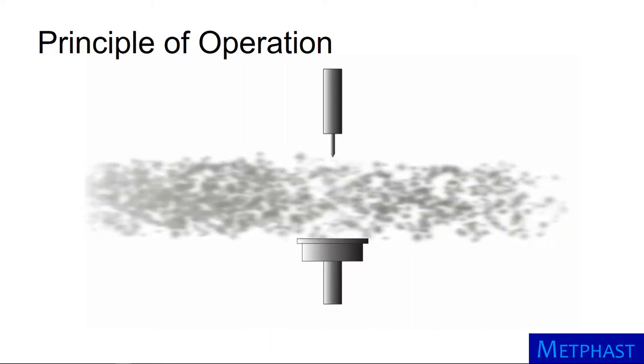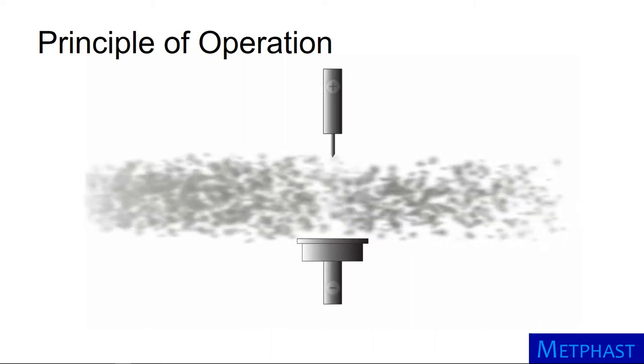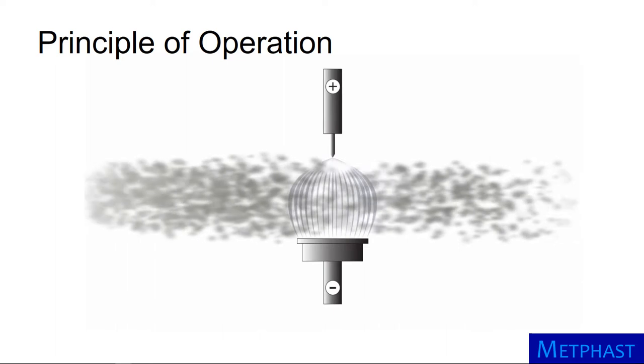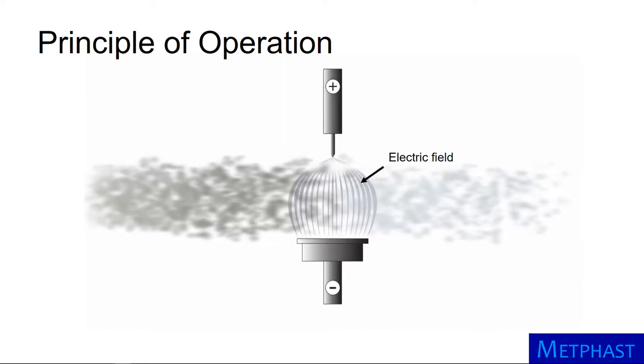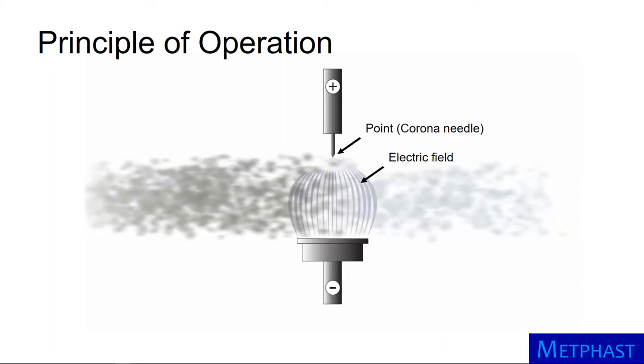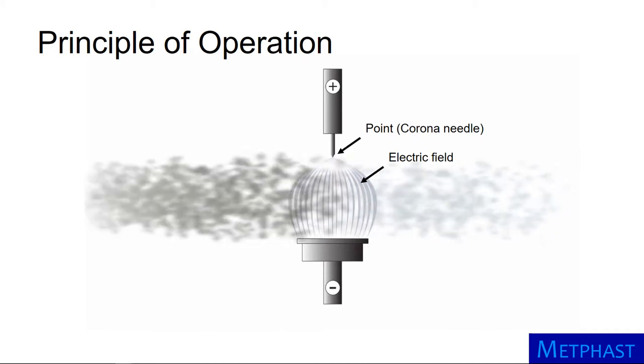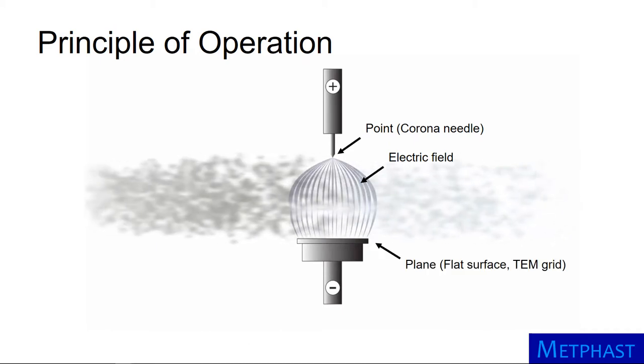This type of ESP is called a point-to-plane ESP. An electric field is formed between a corona needle, the point, and a flat collection surface, the plane, held at opposite voltage.